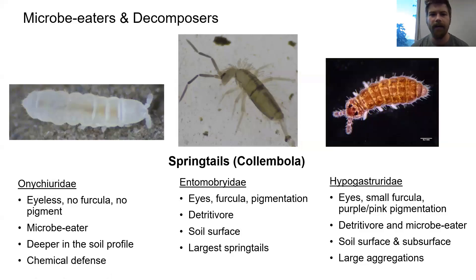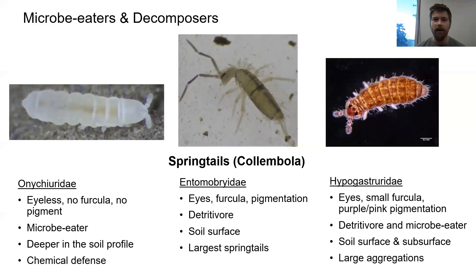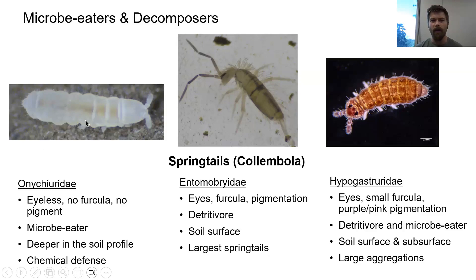Looking at this first springtail group called Onychiurids — these guys are white and eyeless. They don't have a furcula because they live so deep in the soil and in tiny little soil crevices and pores that they really have no use for it, so they've actually lost it adaptively. These guys are microbeaters that primarily feed on fungi and can feed on arbuscular mycorrhizal fungi. Because they live deeper in the soil profile and don't have a furcula to escape predators, they've evolved a chemical defense — they will actually exude a toxin from glands on their backs when disturbed to deter predators.